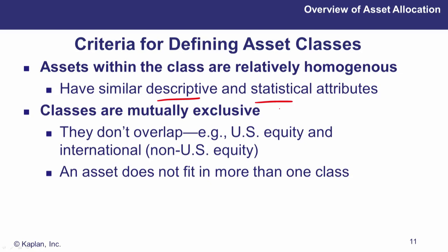The asset classes shouldn't overlap — they should be mutually exclusive. Within equities, we could define sub-asset classes as US and non-US, UK, European, or Asian. There shouldn't be any overlap between them. An individual security shouldn't fit into more than one class — if you've got shares in a big Australian company, that would be Australian equity; it wouldn't fit into US equity.